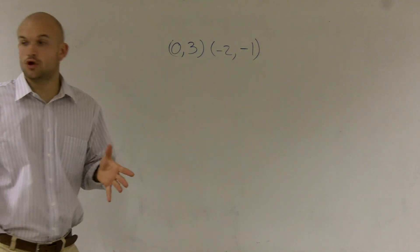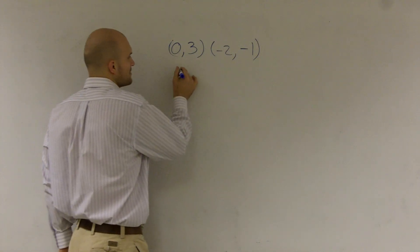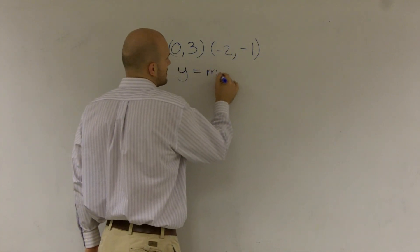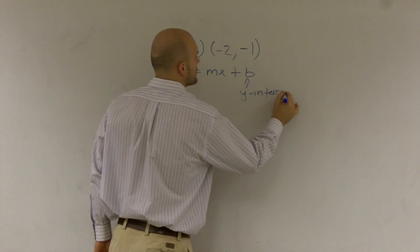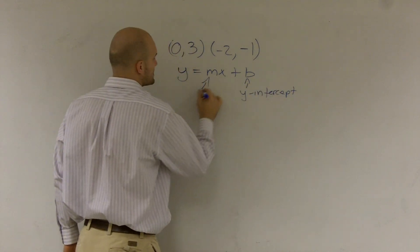So I'm going to use this in slope-intercept form. And if you remember, slope-intercept form is y equals mx plus b, where b represents your y-intercept, and m represents our slope.